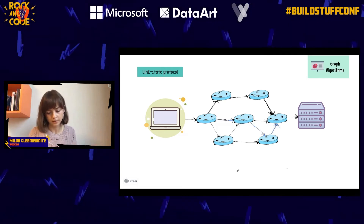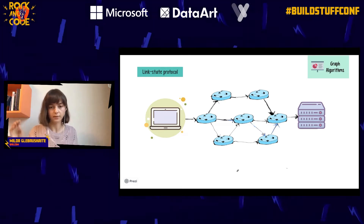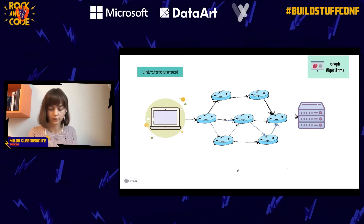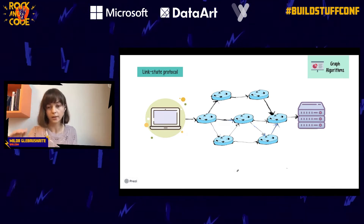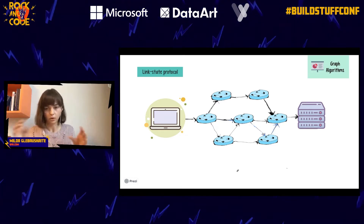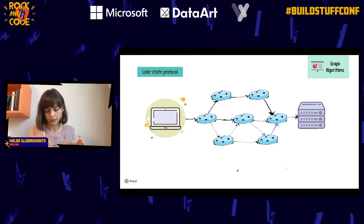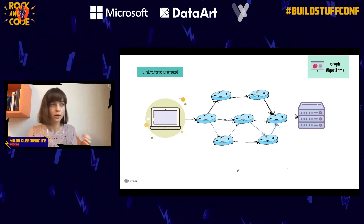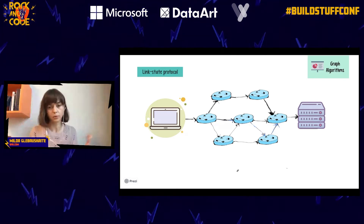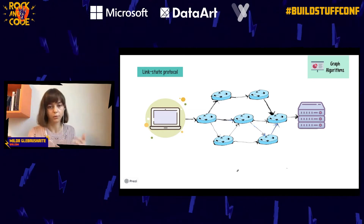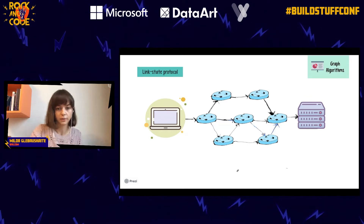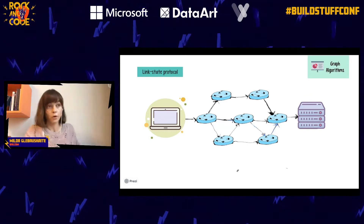Each router in the network receives information about what neighbors it has and what neighbors those neighbors have. Independently, each router builds a map of all routers in the network in the shape of a graph, and independently calculates the most logical next step for forwarding packets. This is how our internet reaches us the fastest.